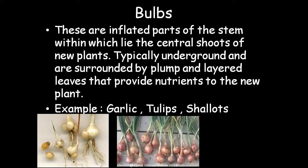Bulbs are the inflated parts of the stem in which lies the central root of the new plant. They are typically underground and surrounded by plump, layered leaves that provide nutrients to the new plant. Examples include garlic, tulips, and shallots.